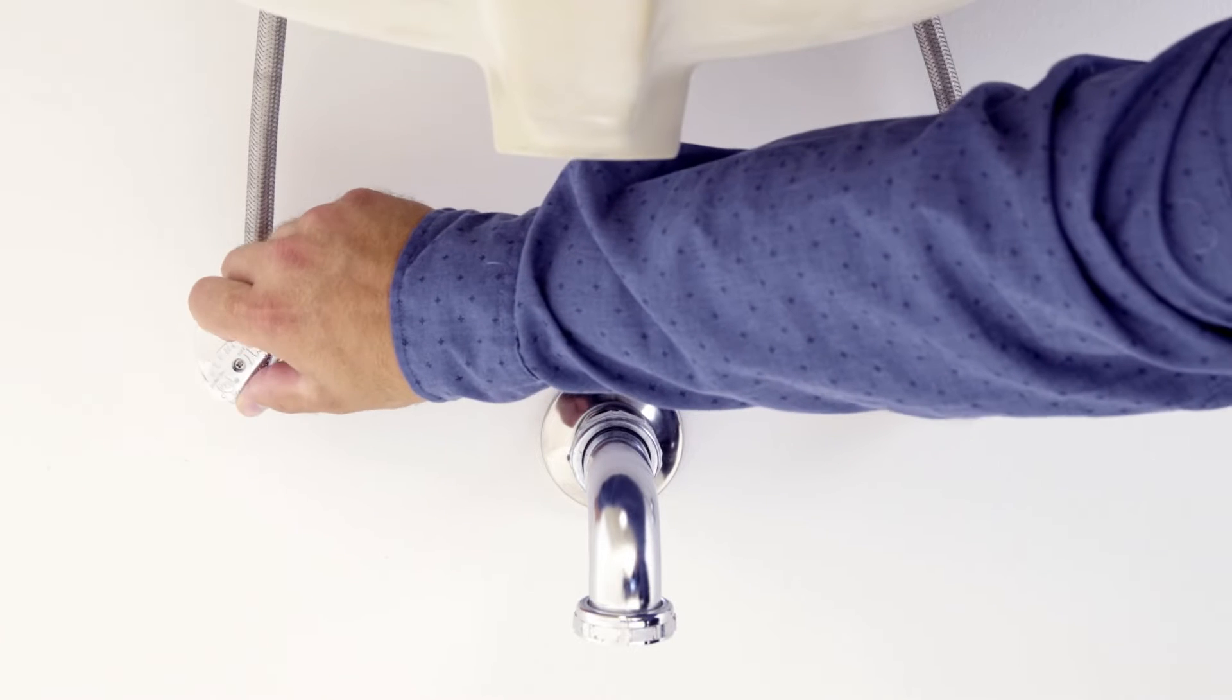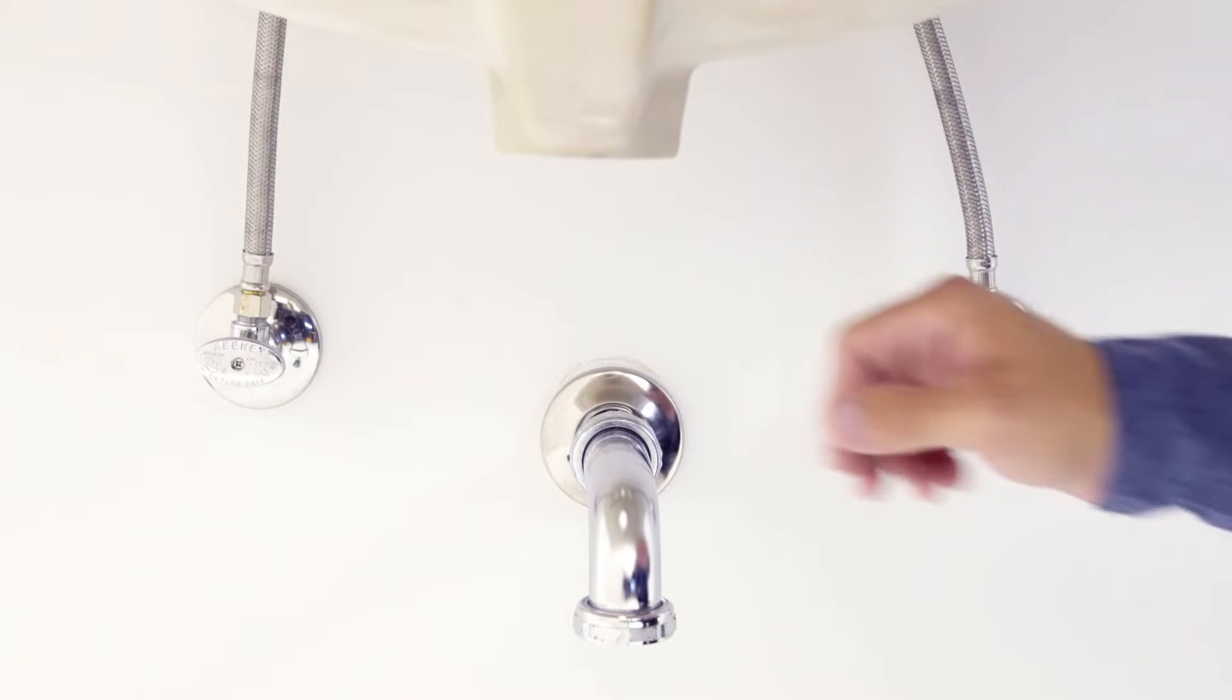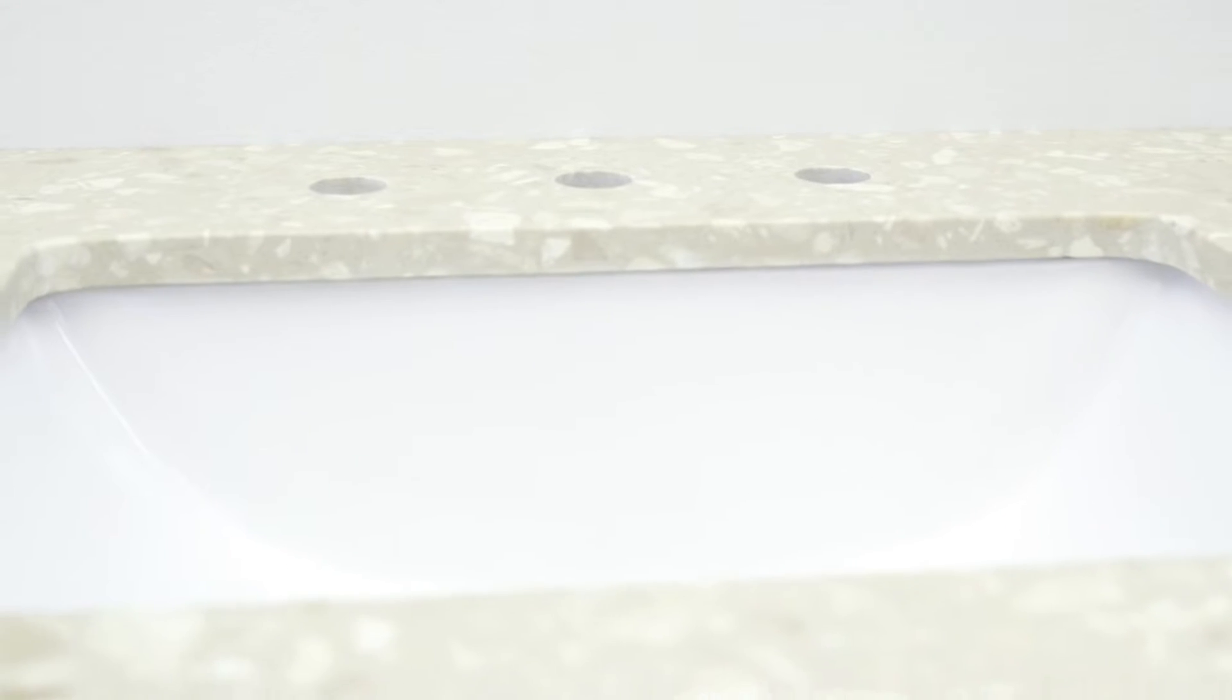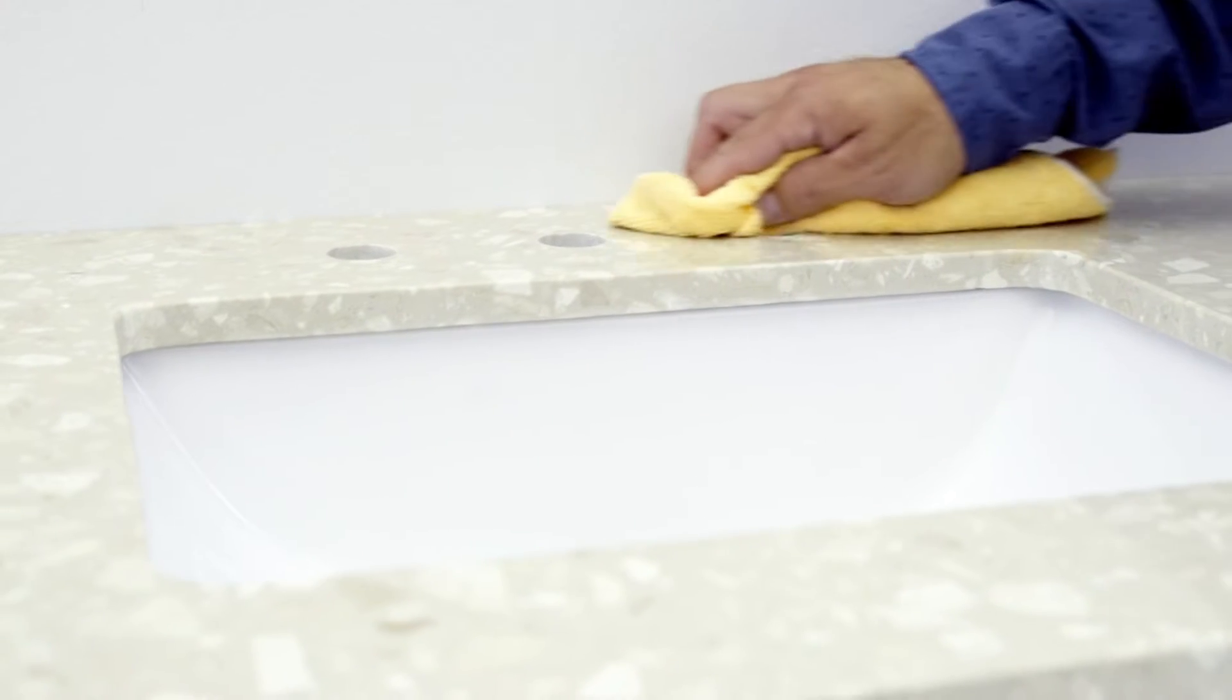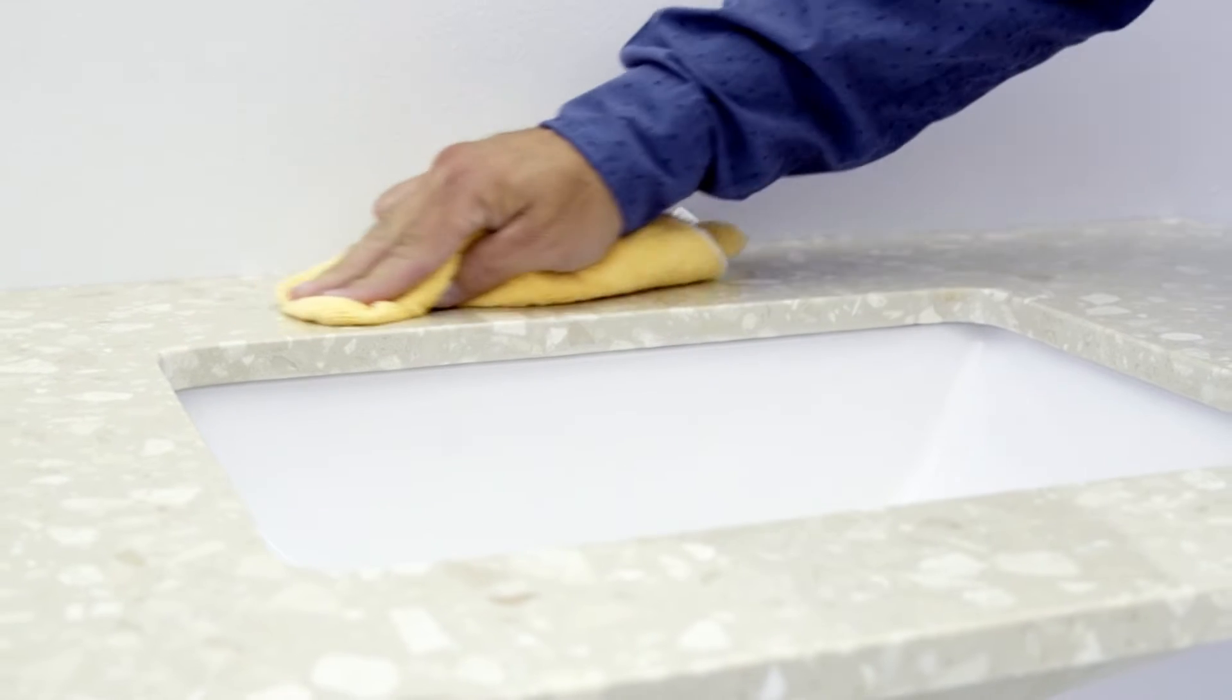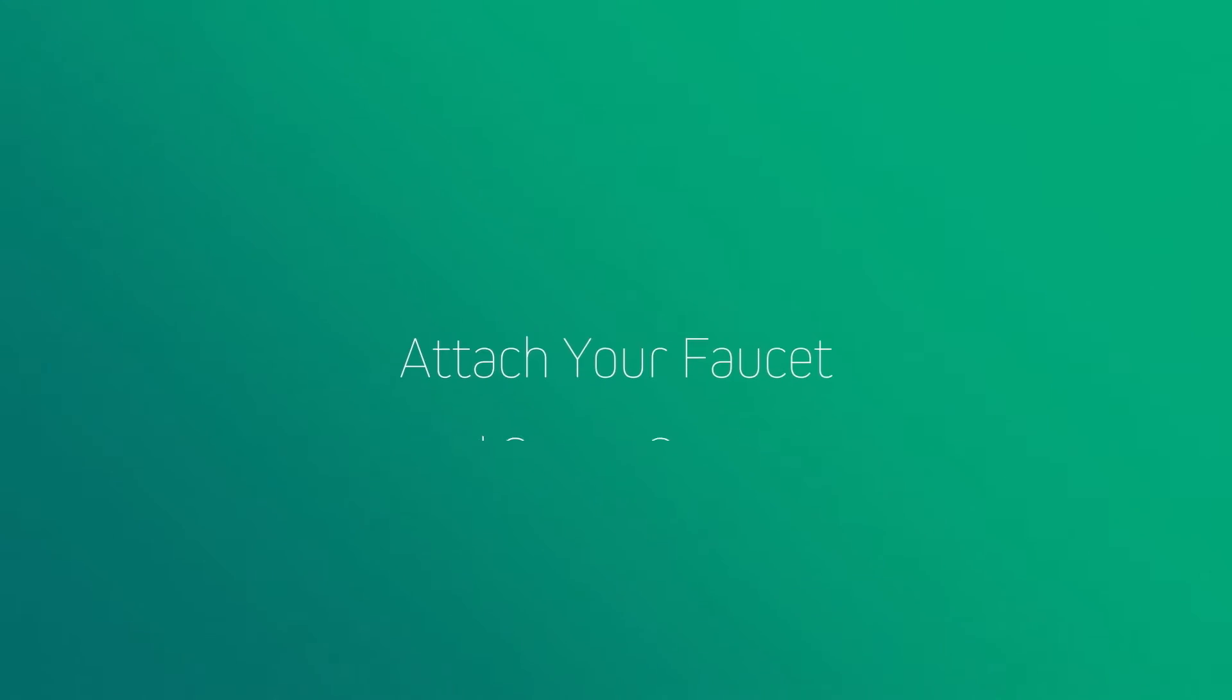Before you begin your installation, you will need to shut off all water supplies and remove the old faucet, which we have already done. Make sure you have a clean area free of debris. Now to begin, first attach your faucet.